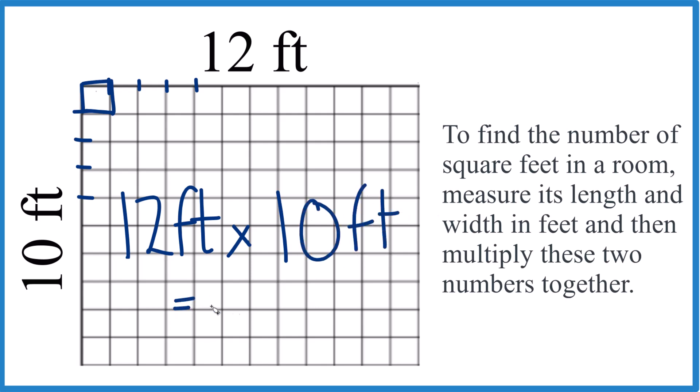When we do that, 12 times 10, that's 120 and we have feet squared, or square feet. So if you have a room that's 12 feet by 10 feet, you're going to have 120 square feet in that room.